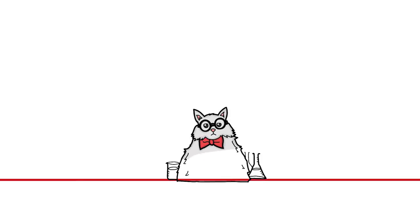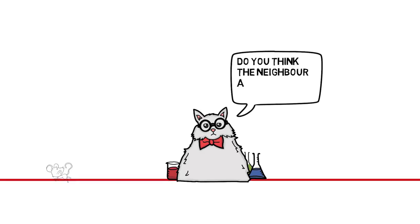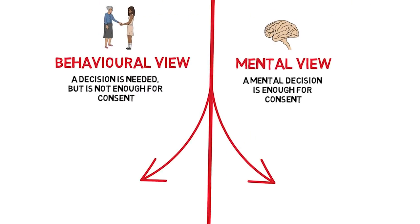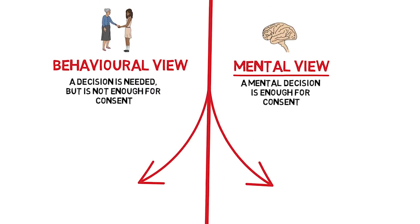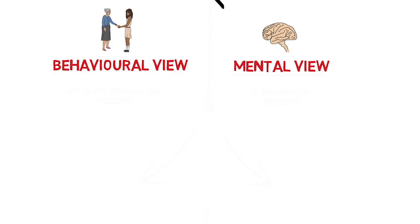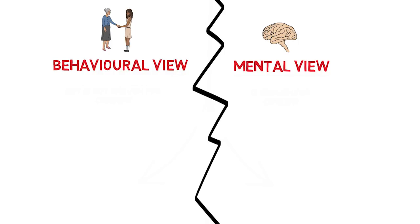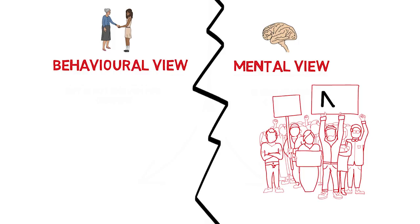Since the behavioural view and the mental view analyse this sort of case differently, we might try to decide which view to accept by thinking about the case. Do you think the neighbour acted permissibly? If you do, then you should accept the mental view. If you don't, then you should accept the behavioural view. But some people are not sure what to think about these cases, and lots of people disagree about them. So it doesn't seem like we will resolve the debate just by thinking about these cases.